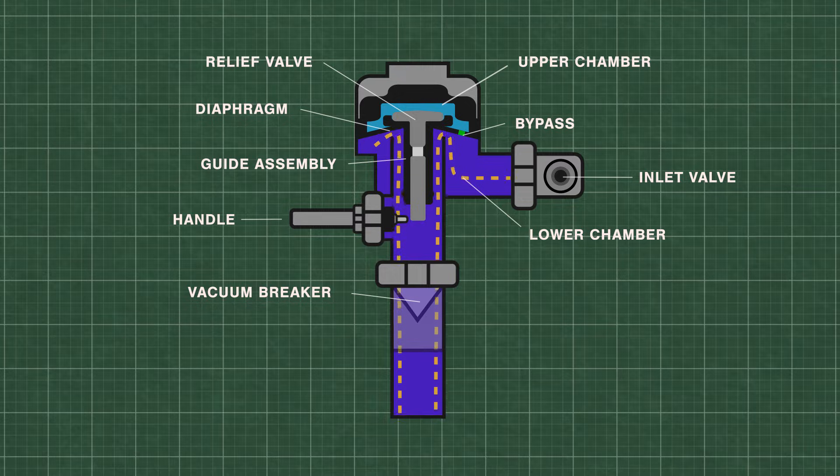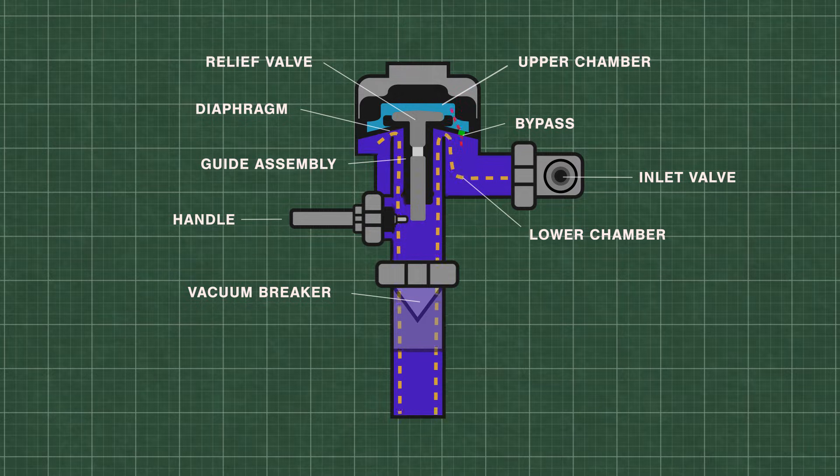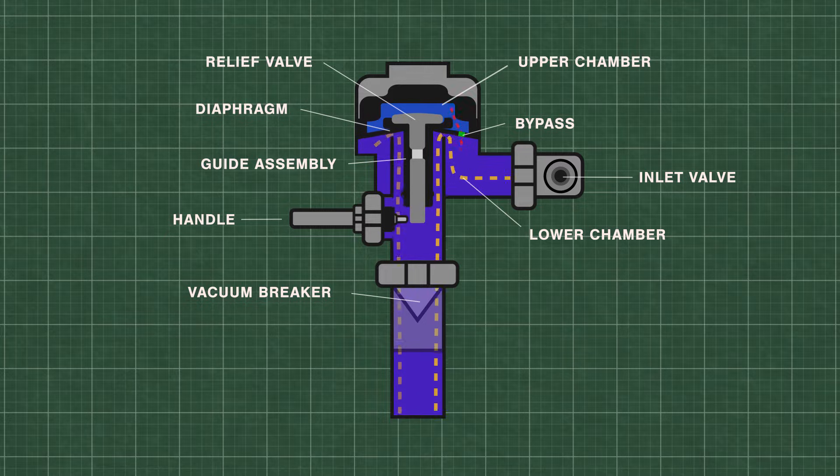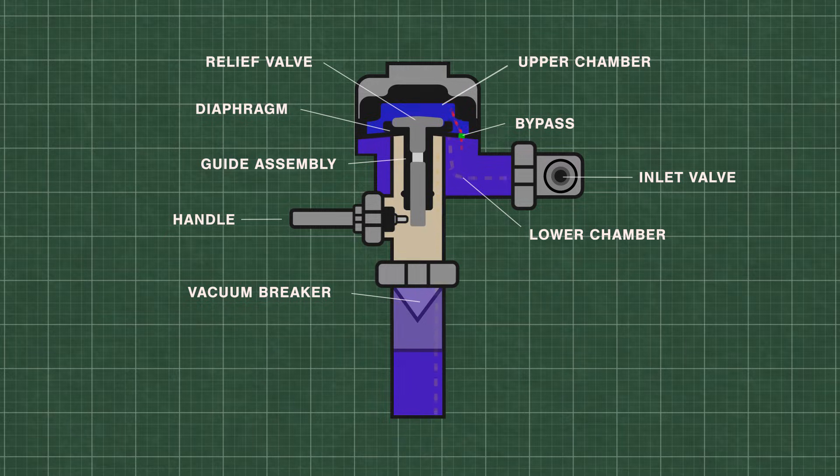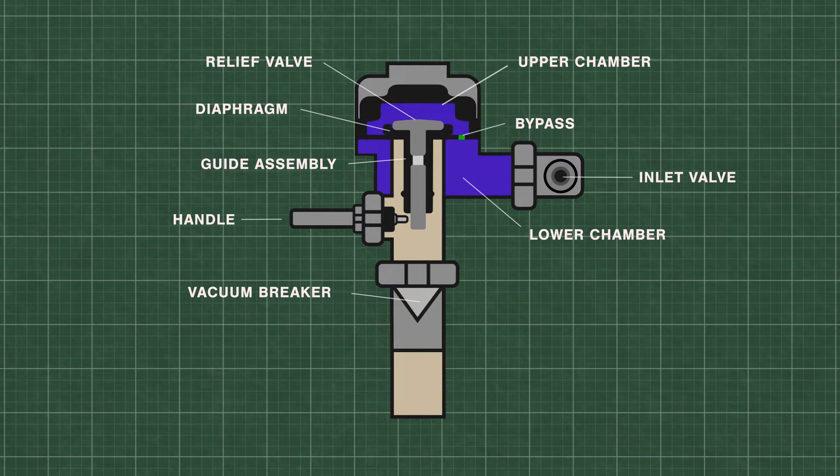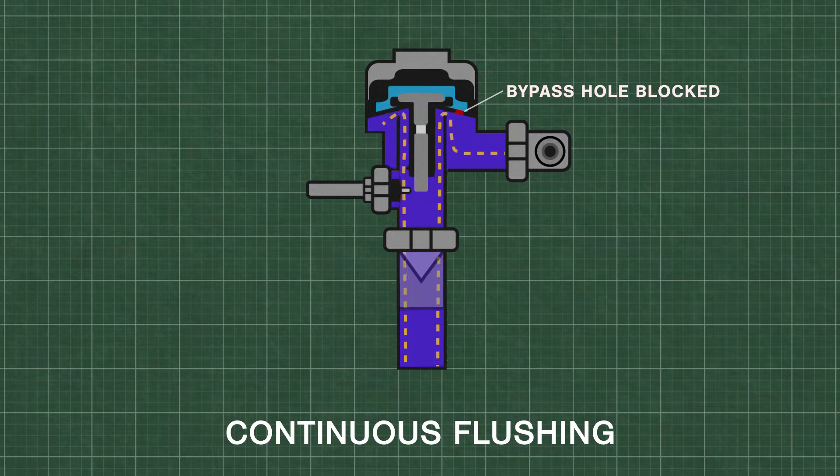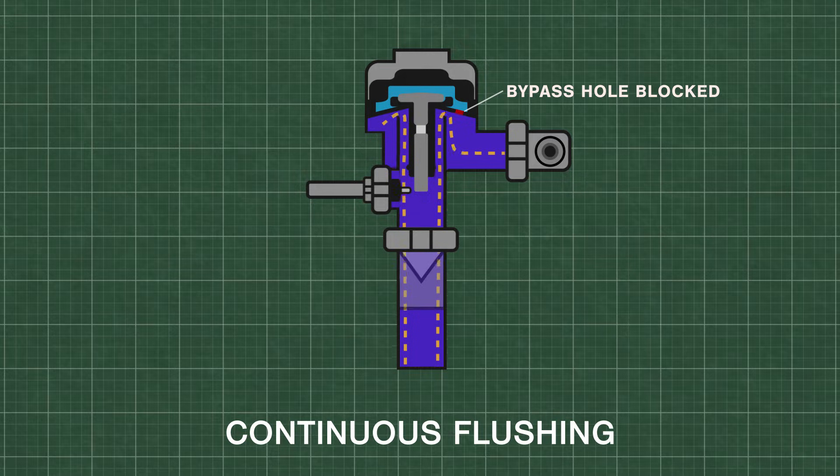During the flush, some of the water is forced back into the upper chamber through a small bypass hole in the diaphragm. The flush continues until the pressure equalizes and pushes the diaphragm down onto the valve seat. The bypass hole size is extremely important for proper metering of water.